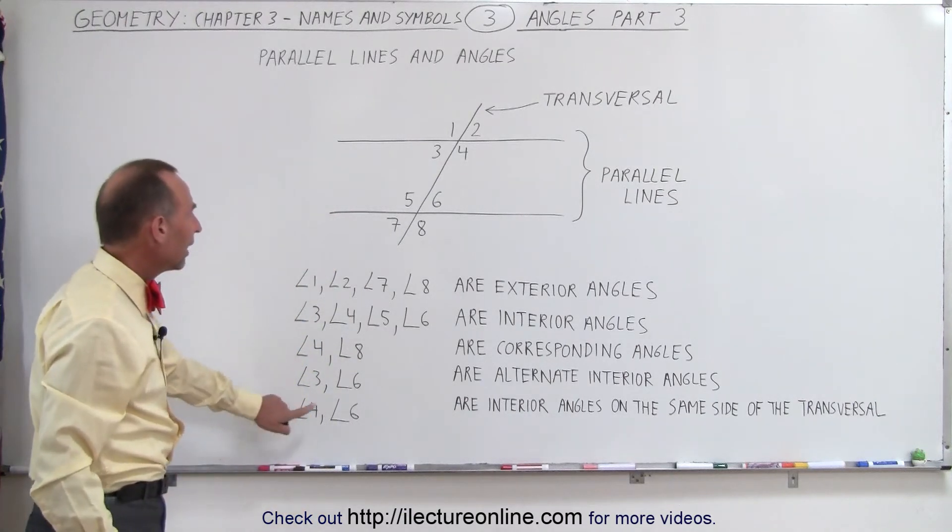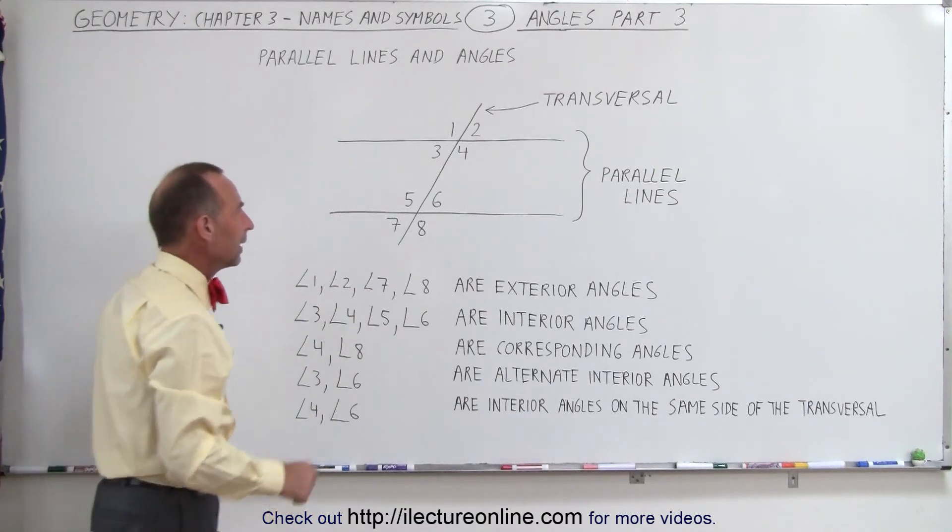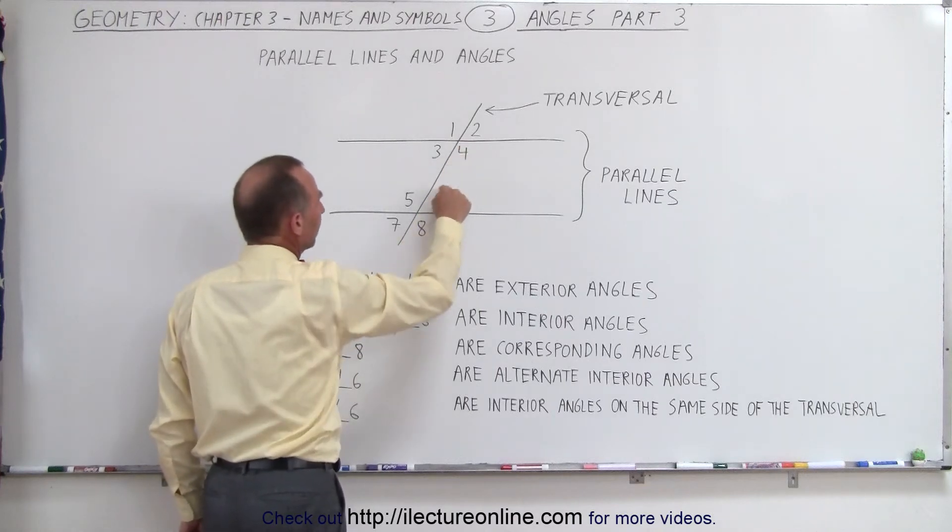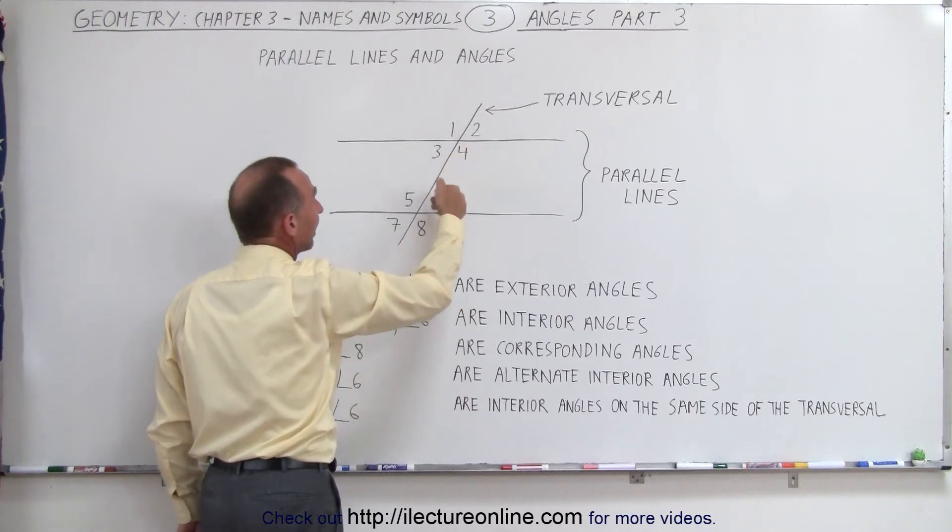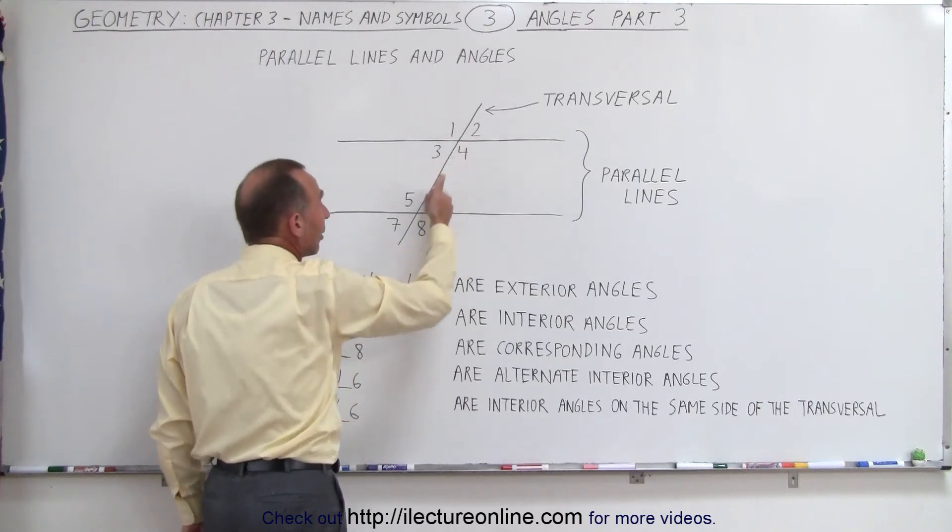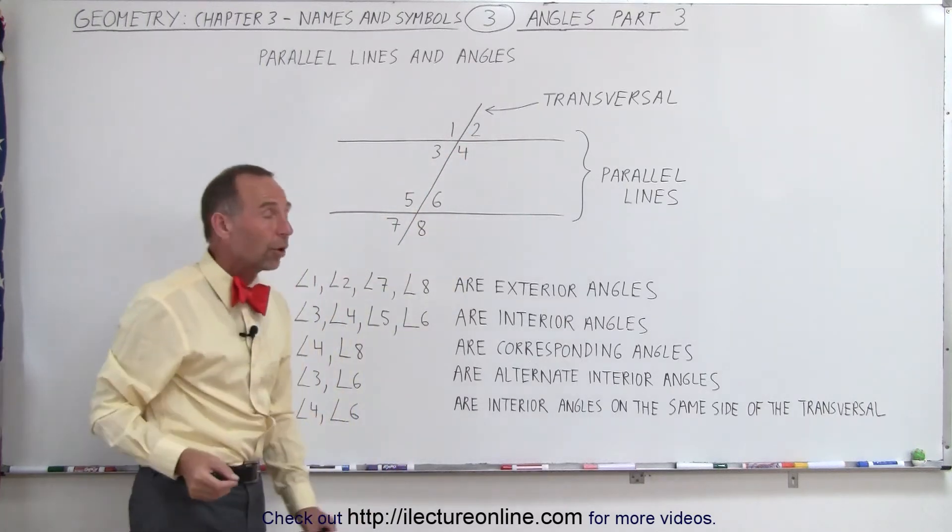What about angles four and six? Now they don't have the same angular measure. Notice that this angle is less than 90 degrees. This one is greater than 90 degrees. In actuality, those two angular measures add up to 180 degrees.